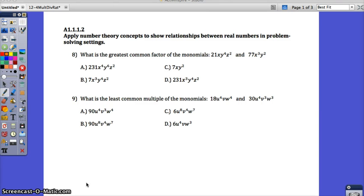This video is going to go over number 8 and 9 from your Algebra 1 review packet. What is the greatest common factor of the monomials 21xy to the 4th z squared and 77x cubed y squared? Remember what greatest common factor is whenever you're starting this problem.